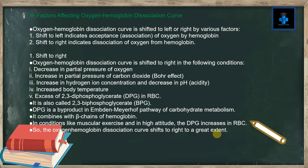The oxygen-hemoglobin dissociation curve is shifted to the right in the following conditions: number one, decrease in partial pressure of oxygen; number two, increase in partial pressure of carbon dioxide — known as the Bohr effect; number three, increase in hydrogen ion concentration leading to decrease in pH or acidity; number four, increased body temperature; number five, excess of 2,3-diphosphoglycerate (2,3-DPG) in red blood cells.